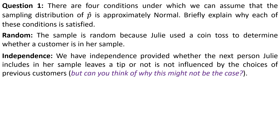Independence is a bit tricky by contrast. We could say that we have independence, provided whether the next person Julie includes in her sample leaves a tip or not is not influenced by the choices of previous customers. For example, if I was standing in line and the person in front of me left a tip, I would be more likely to leave a tip as well, just by social pressure. Another example: if you have a group of people who know each other, maybe they work in the same office, if one of them leaves a tip, the probability that others in the same group will leave a tip is probably higher because of that social influence. So there are some reasons to argue against independence in this case.